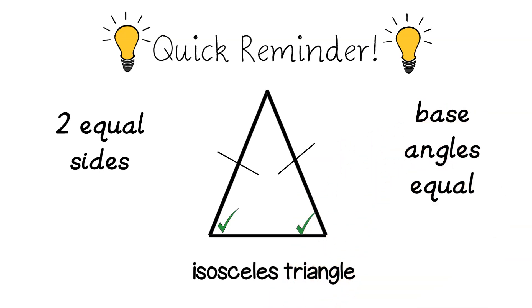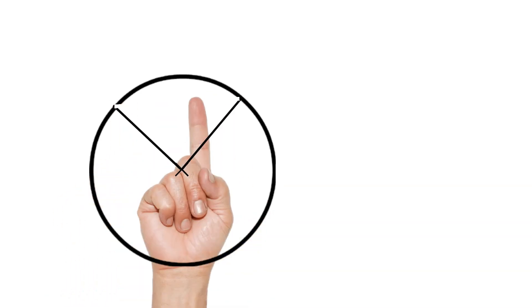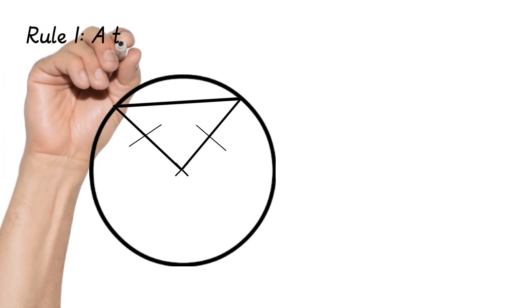So let's apply that to this example. So a triangle formed by two radii is an isosceles triangle and that's shown here. So I've got the centre which is O and I've got my radii which are equal in size. So that means that must be an isosceles. We have two equal sides and therefore two base angles that are equal.